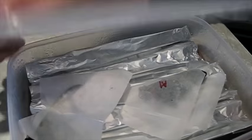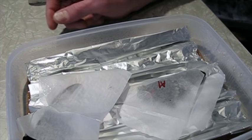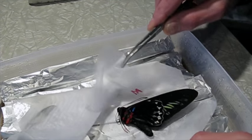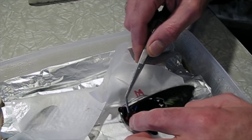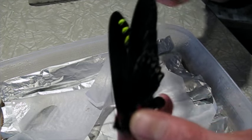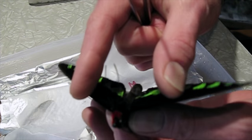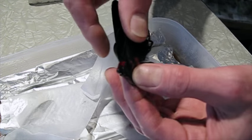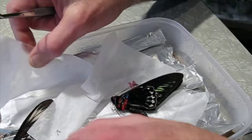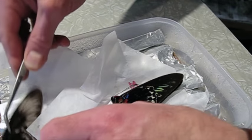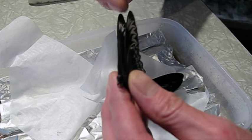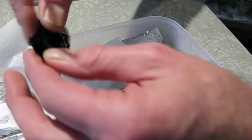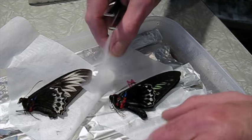Now these specimens have been relaxing for a day and we'll see how they look. Oh yeah, the wings are very soft. You want them nice and soft and flexible. If they're stiff, just put them back and let them go a little bit longer. This is the female. Very nice, this is perfect. Let's start with the male.